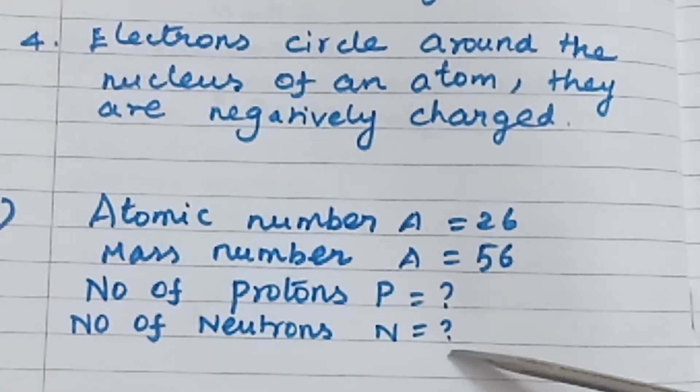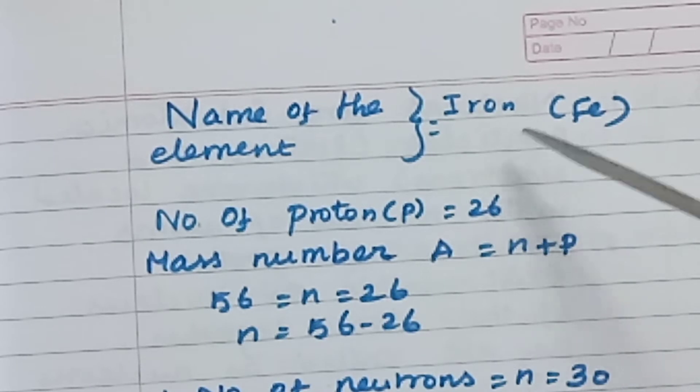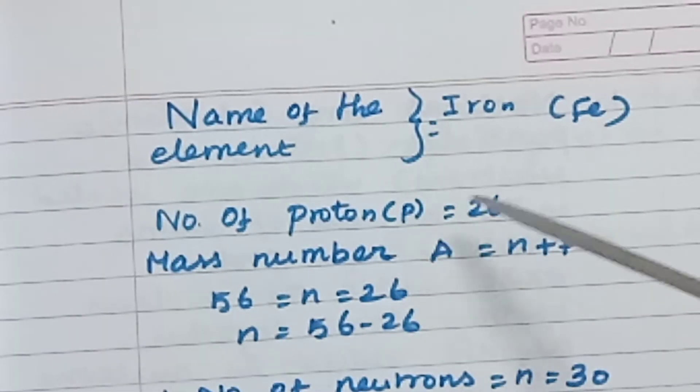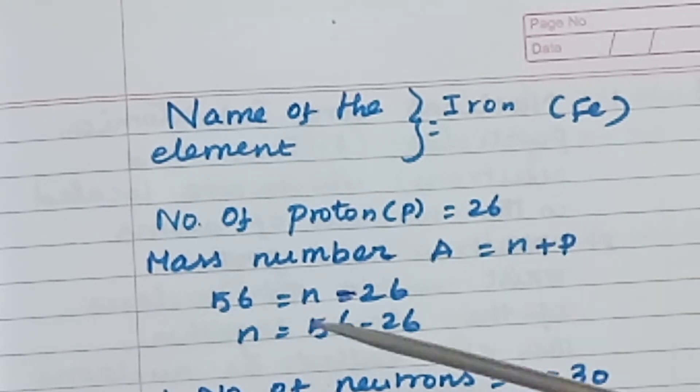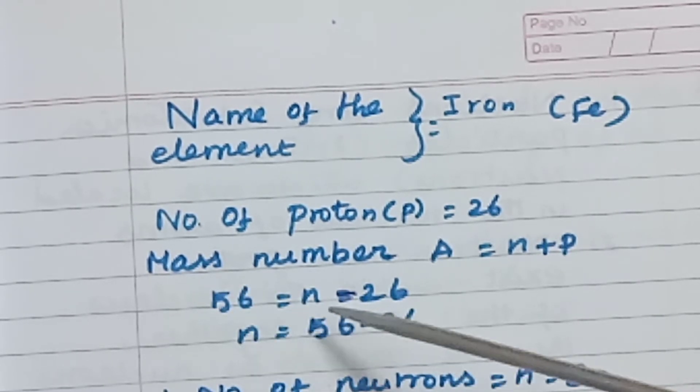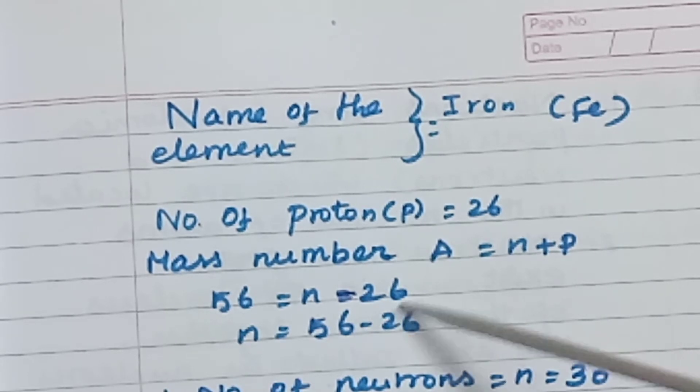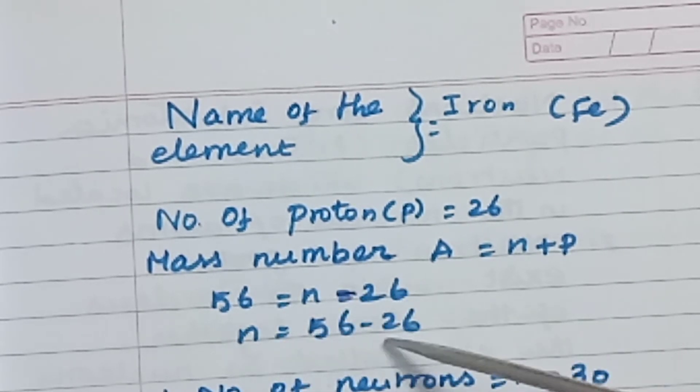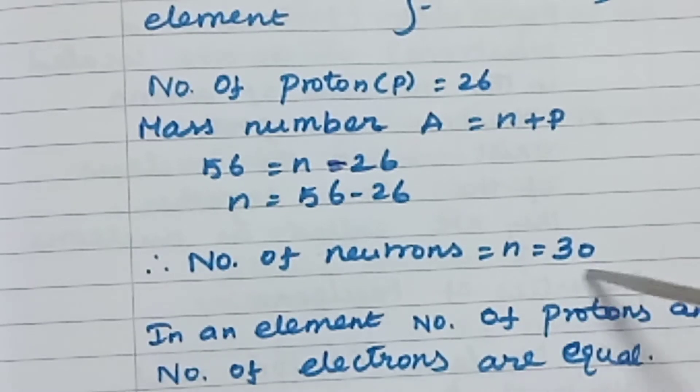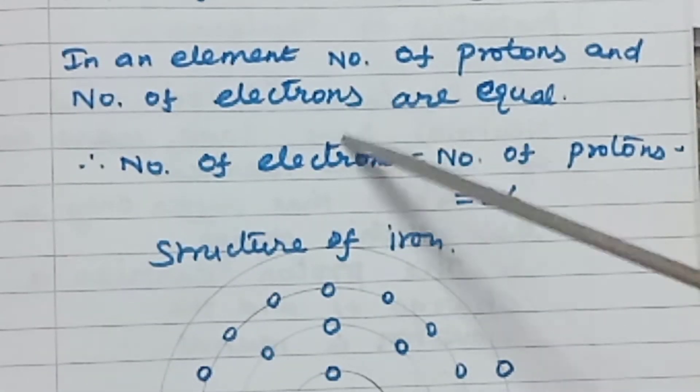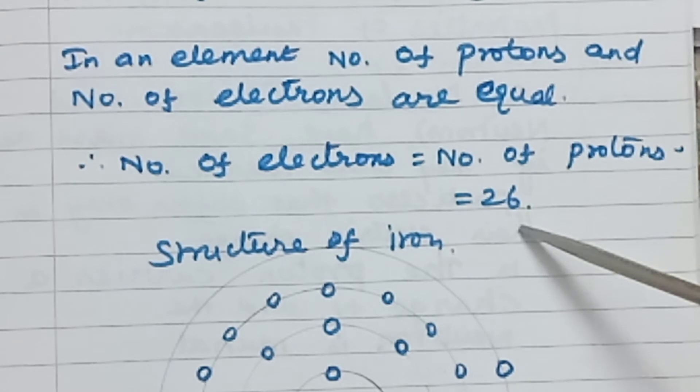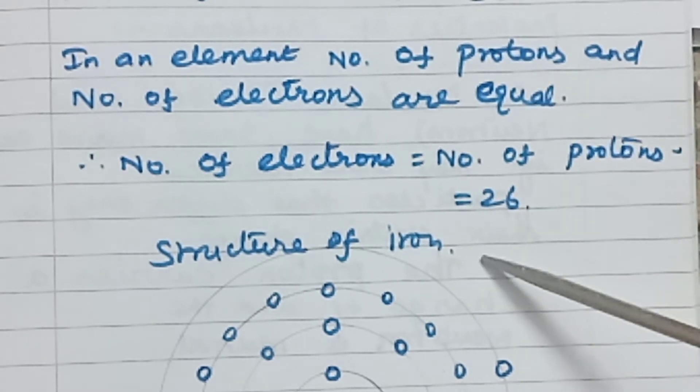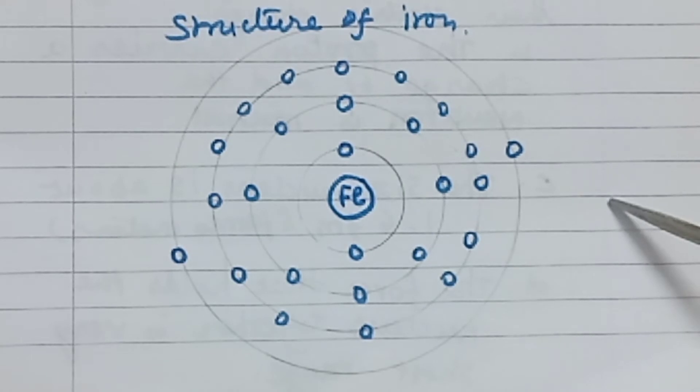In an element, number of protons equals number of electrons. Atomic number 26 means the atom has 26 protons and 26 electrons. Mass number A equals N plus P. Since number of protons equals 26, N equals 56 minus 26, so N equals 30. Structure of iron with electronic configuration is shown in the diagram.